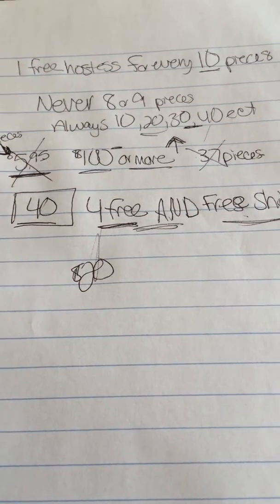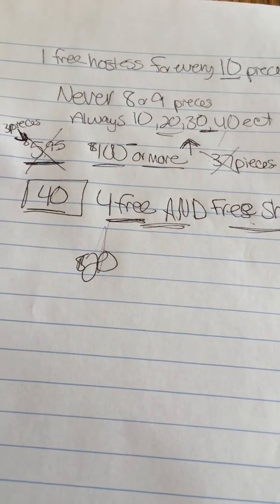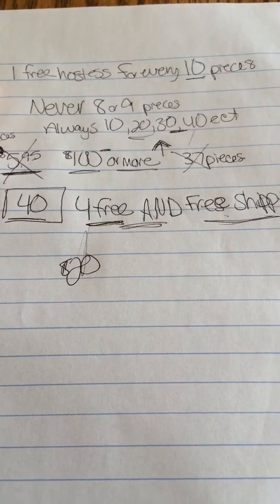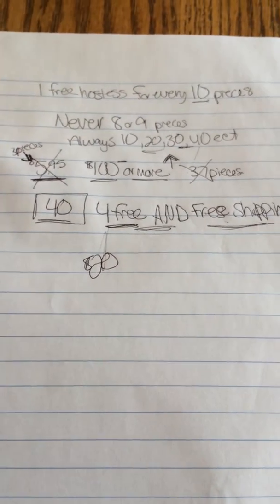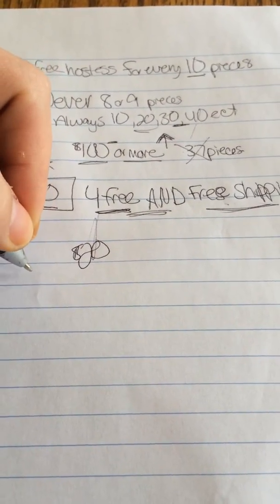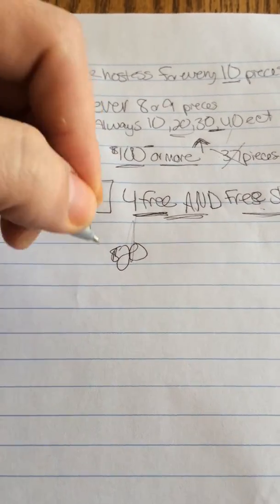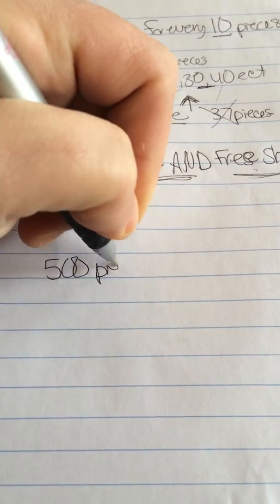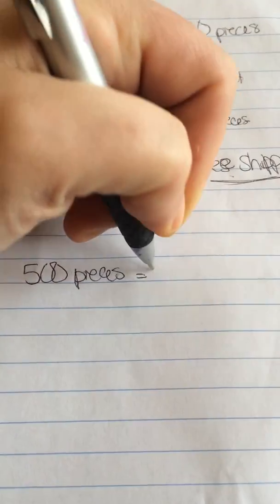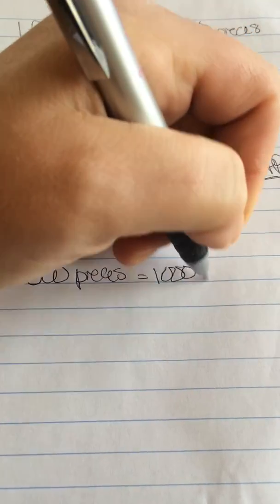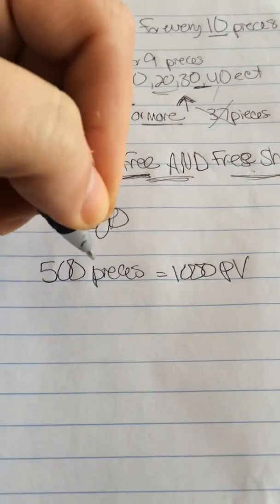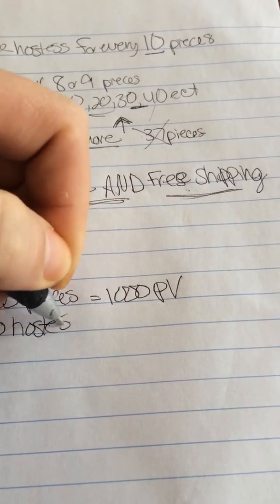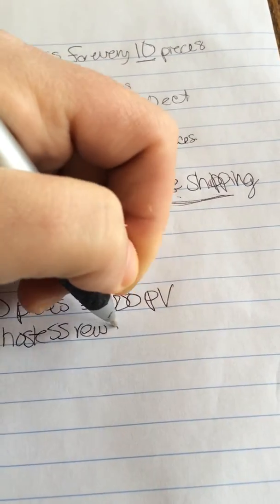Now there is one other little trick. If you have a large event coming up or you're working on building up your inventory, instead of reinvesting your profit every time and slowly building it up, if you order 500 pieces, which is a thousand PV, instead of hostess rewards there's no hostess rewards if you do it this way.